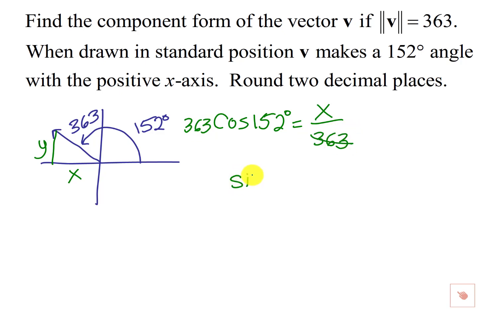And similarly, if we had the sine of 152 degrees, that's going to be opposite over hypotenuse, and multiplying 363 over here gives us the y component.